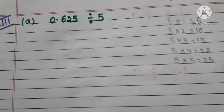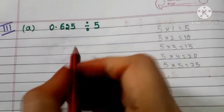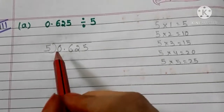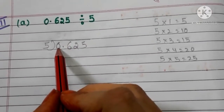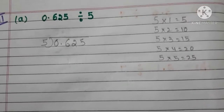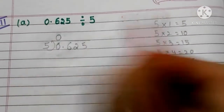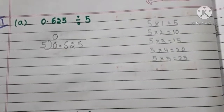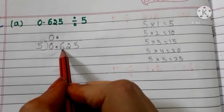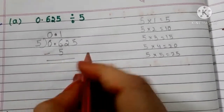Now let us go to another example. Here we have 0.625 divided by 5. First, arrange like this: 0.625 divided by 5. In the dividend 0.625, the first number is 0, meaning this decimal number has no whole number part. In these cases, we write 0 in the quotient first, then put the decimal point. Now consider 6. Five 1s are 5, so write 1 in the quotient and 5 below. 6 minus 5 is 1.